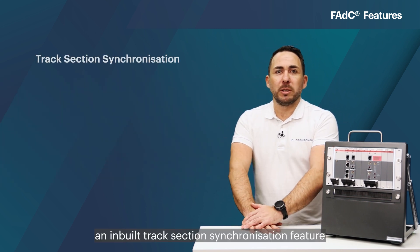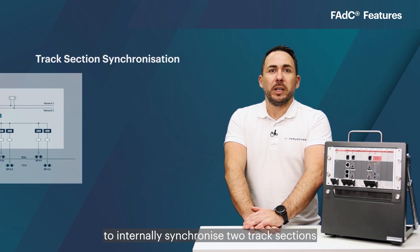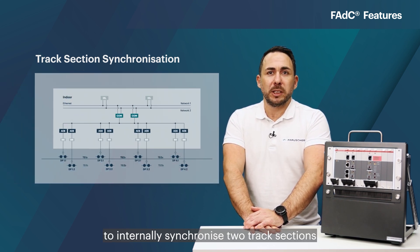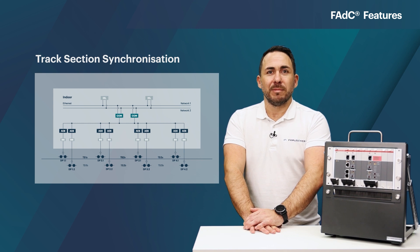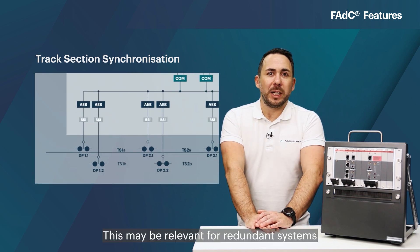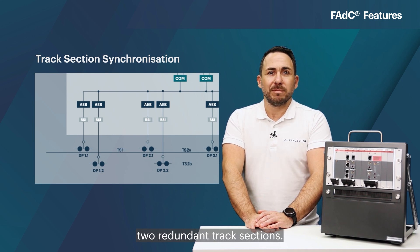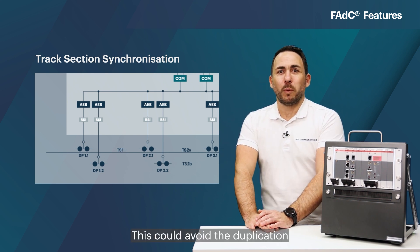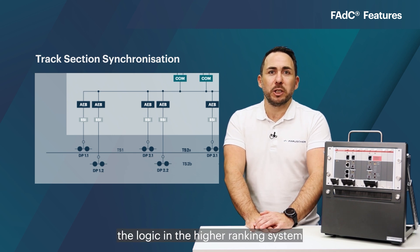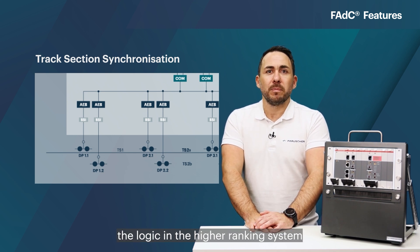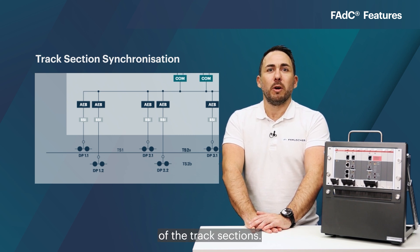Additionally, an inbuilt track section synchronization feature can be configured in order to internally synchronize two track sections to only one logical output. This may be relevant for redundant systems in order to automatically synchronize two redundant track sections. This could avoid the duplication of wiring work or simplify the logic in the higher-ranking system, as the axle counting system takes over the logical synchronization of the track sections.